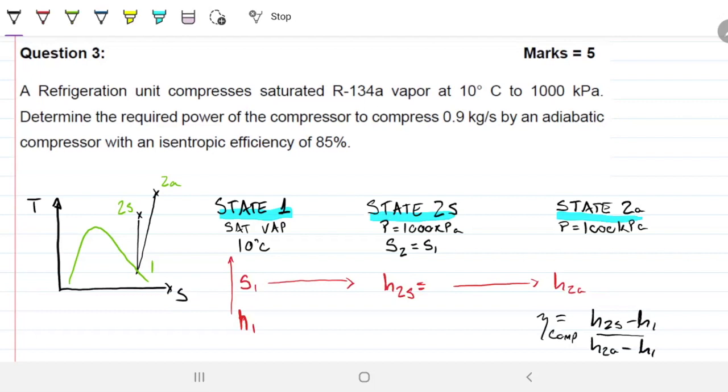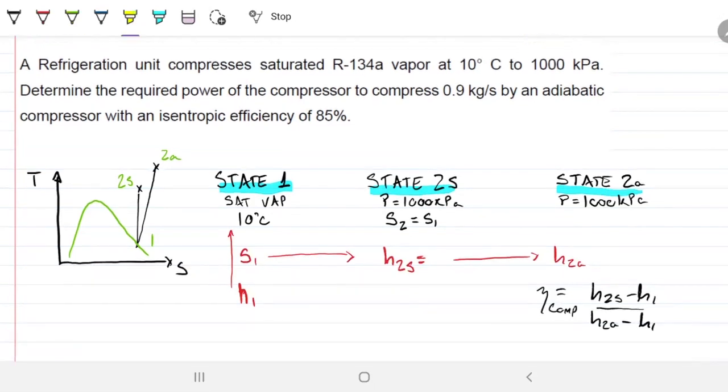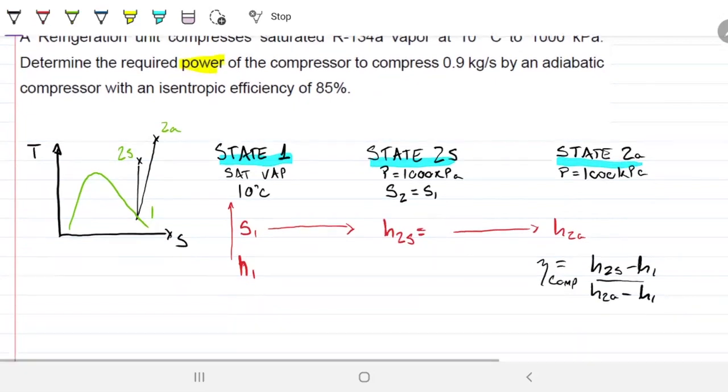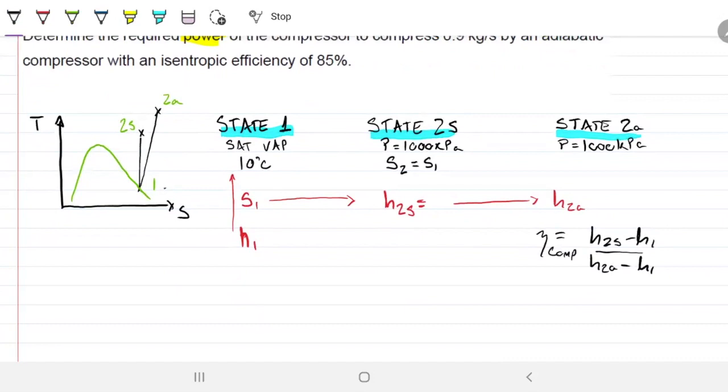Alright, so as long as I can grab the h2S, I can grab h2A as well and completely define my state 2A. Now, we're looking for the required power for this compressor to work. So we're looking for watts. And we know that power is related to this jump here, this energy and this jump here, according to the mass flow rate.